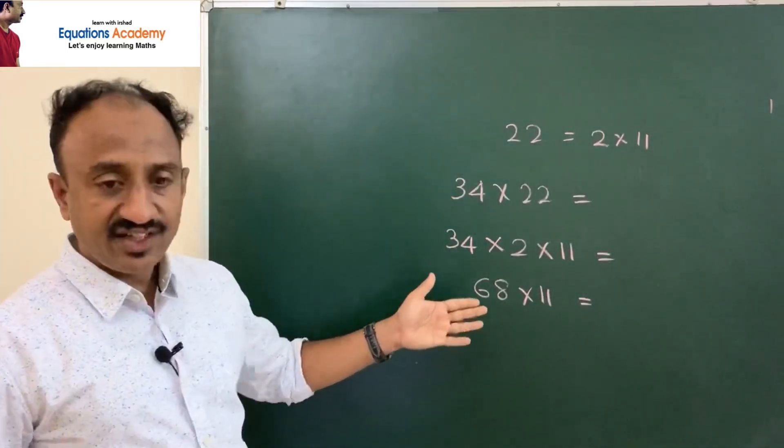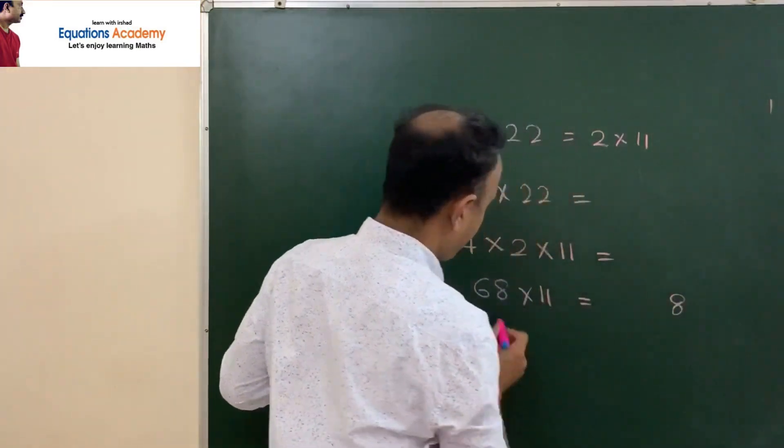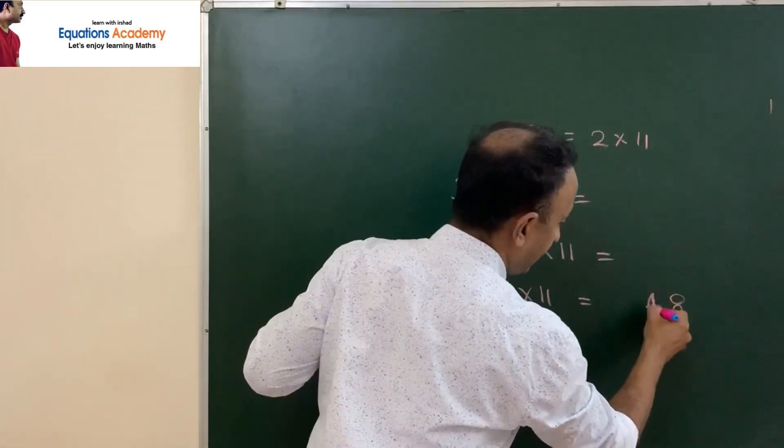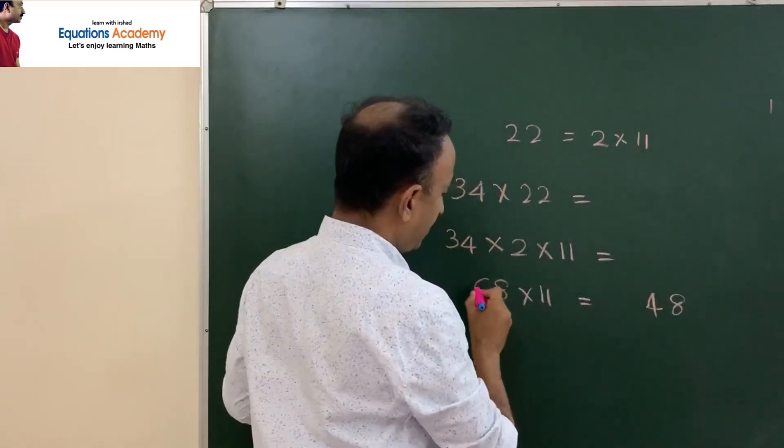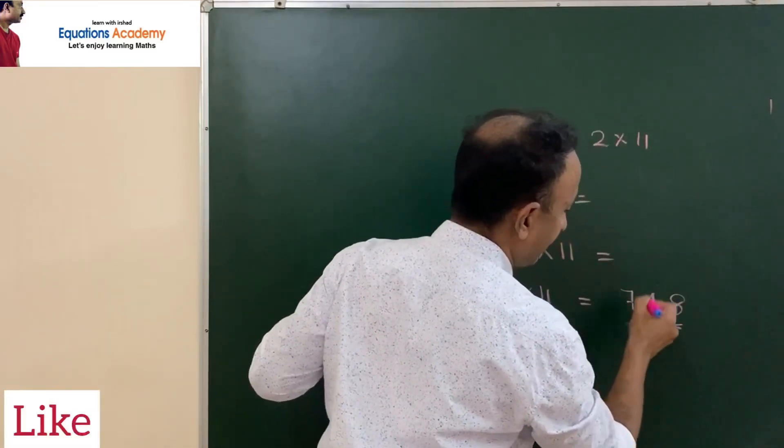This 68 multiplied by 11. We just learned what to do. First, put 8. 8 plus 6 is 14, 1 carry forward. 6 plus that 1 is 7. So answer is 748.